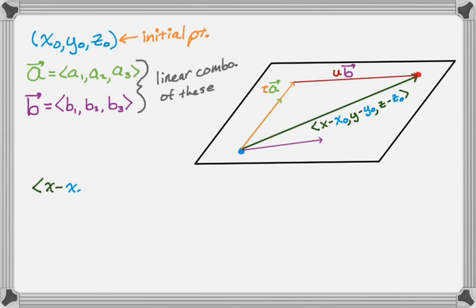So what I have is this. So that is kind of the generic vector that I made in the plane between the point x, y, z and my initial point. And then this should be equal to, and you can see it in the picture, it's t times a plus u times b, where t and u are called the parameters.